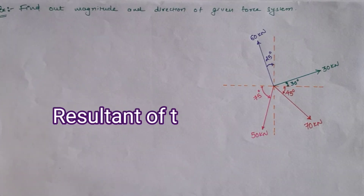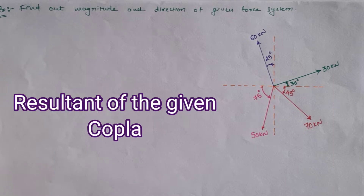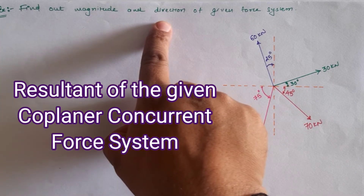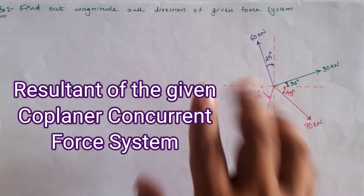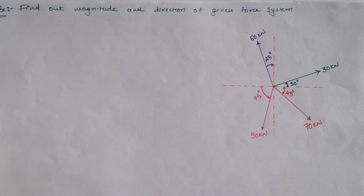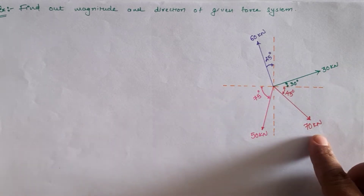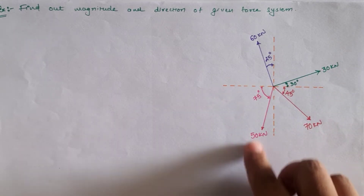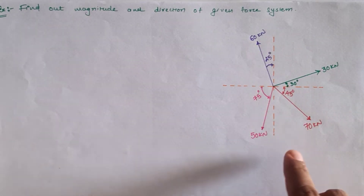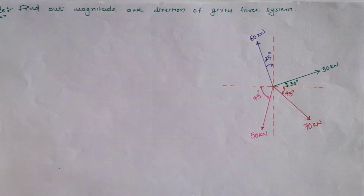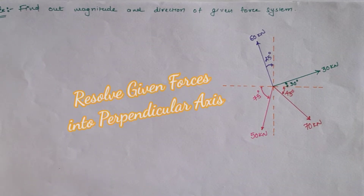Hello friends, today we are going to analyze the given force system for the calculation of magnitude and direction of the resultant forces. Observing the figure, we have four different forces: 30, 70, 50, and 60 kilonewtons, each acting at an angle with either the horizontal or vertical. First, we have to resolve these forces along the x and y directions.